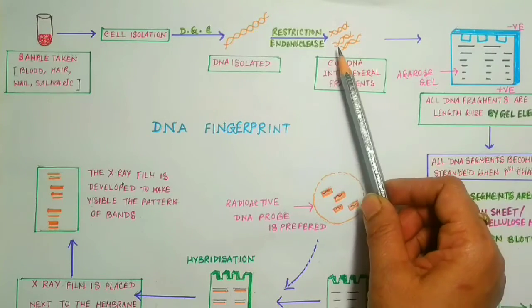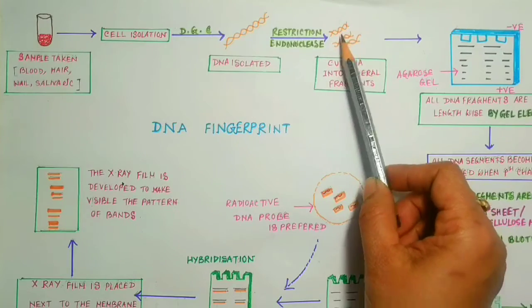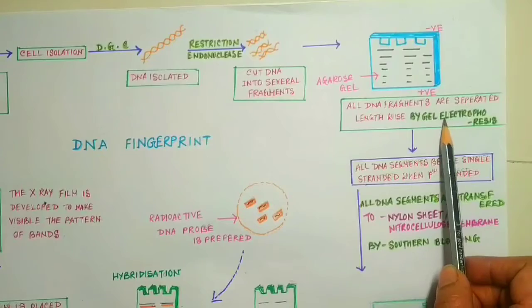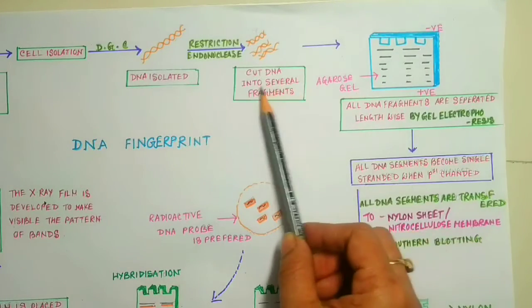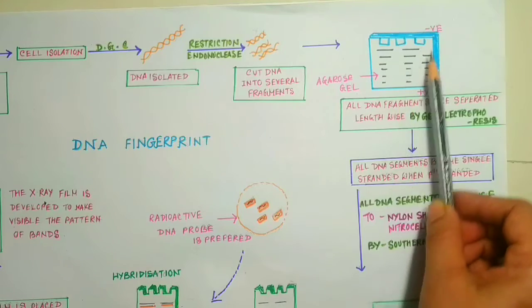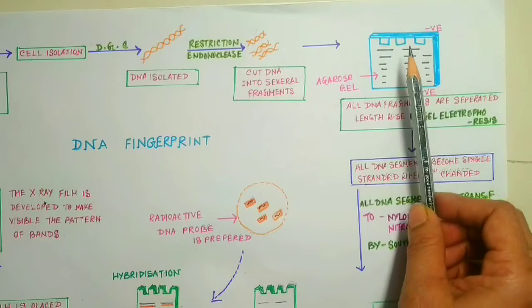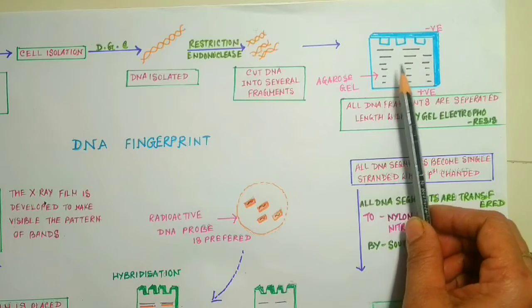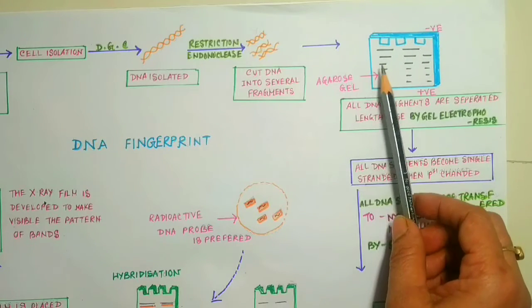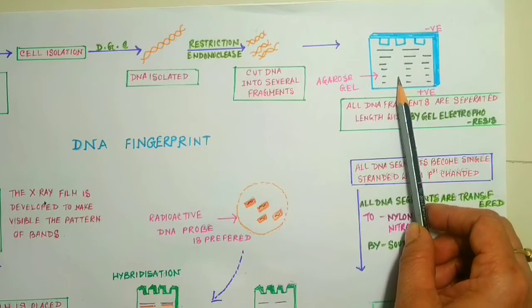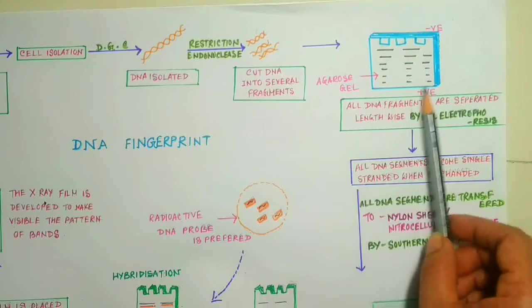After DNA is cut into several pieces, then by the process of gel electrophoresis, the DNA are arranged according to their length. In gel electrophoresis, the DNA strands are separated from each other and arranged according to their length under the force of an electric field. For that, this is an electric field.